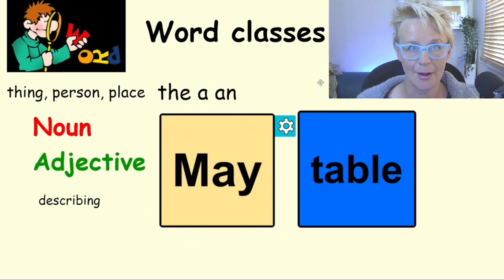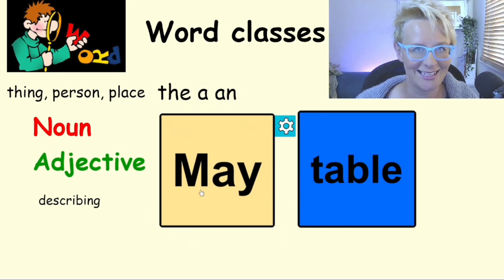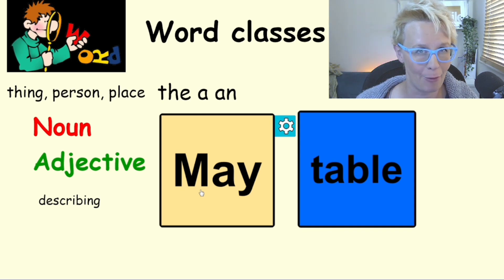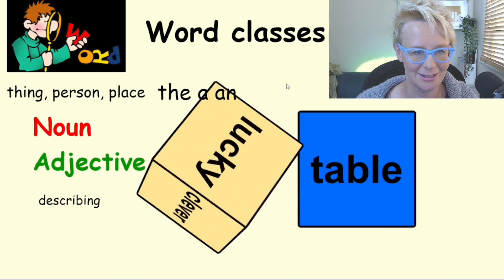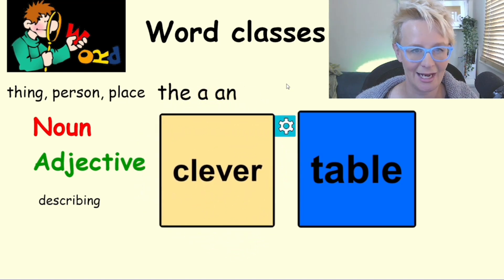The next one is 'May' — it's got a capital letter, so that tells us it's a proper noun. Next one: 'clever' — if something or somebody is described as being clever, then it is an adjective.